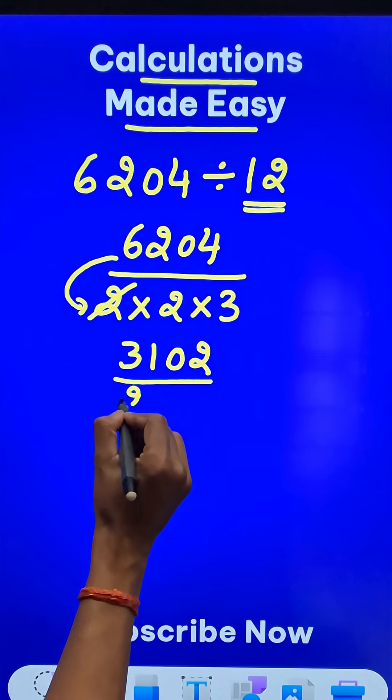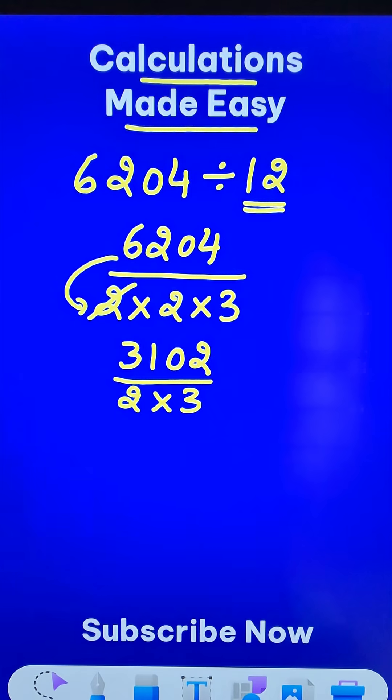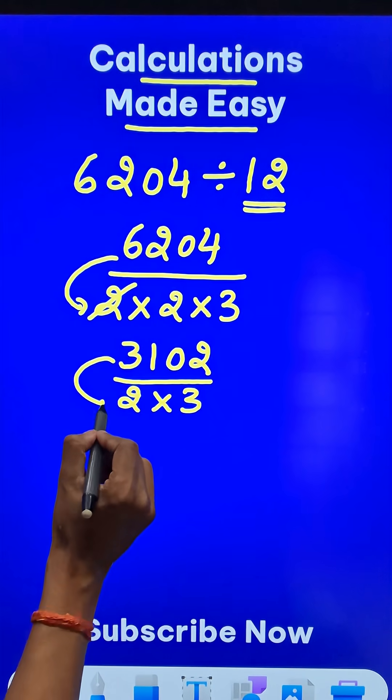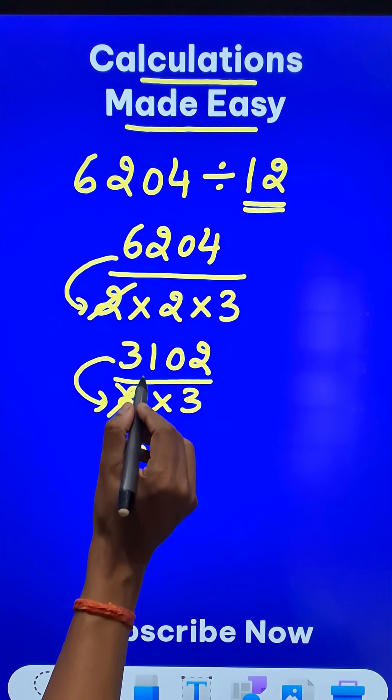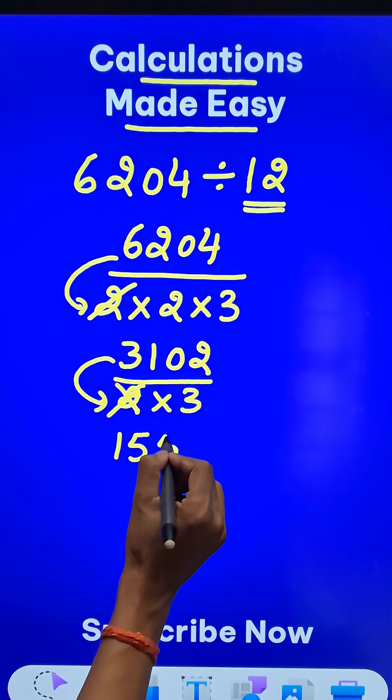Likewise, another time halving will get rid of this 2 also. Half of 3102: we have to take 15 and 1 carry, then 10 means 5, and 2 means 1.